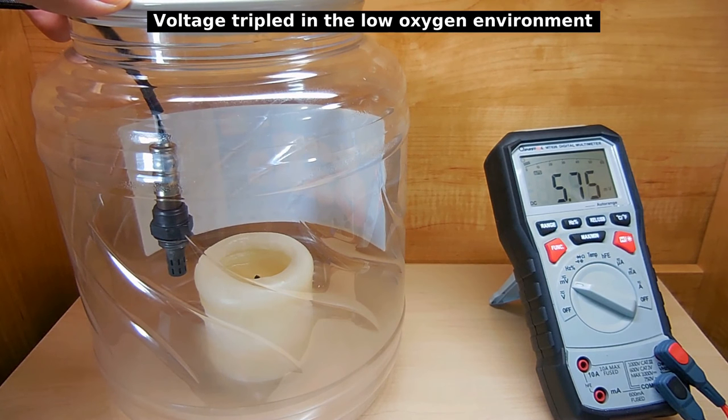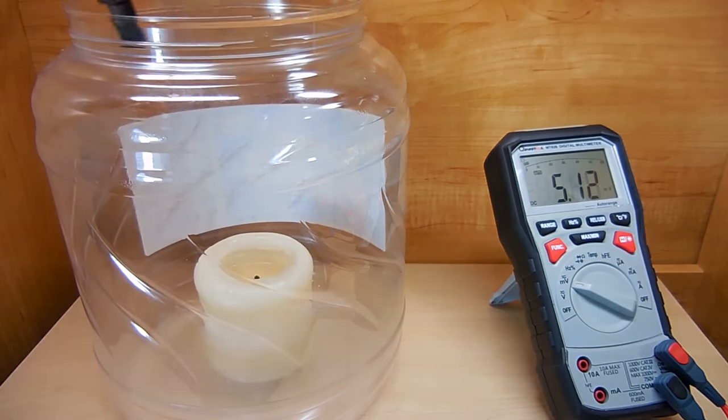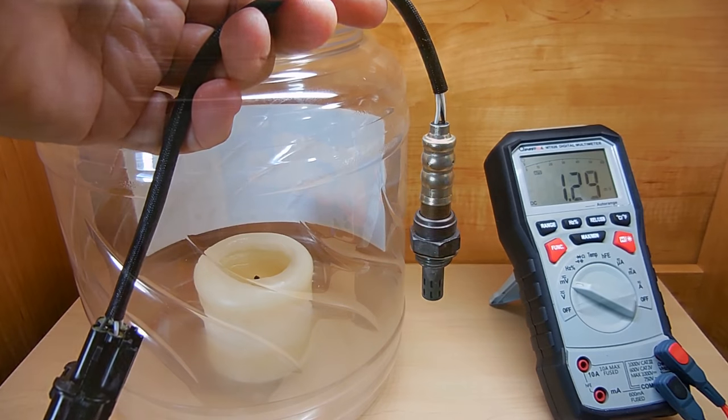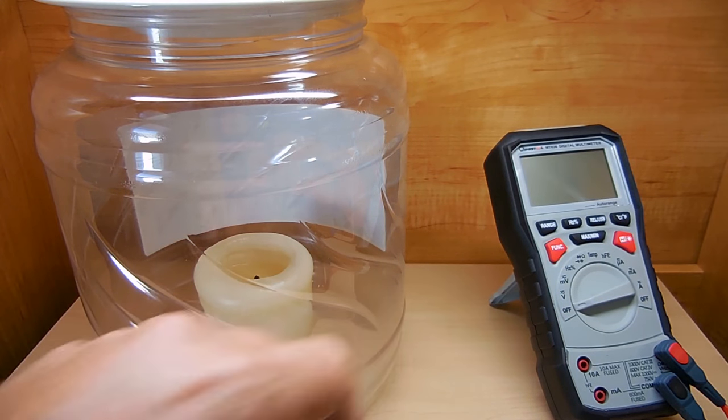Because there's a lack of oxygen inside, the voltage went higher. Just like the propane torch test, it displaces oxygen around the sensor element, causing the voltage to rise. Take it back out, and it should go right back down.